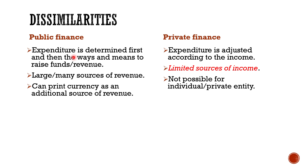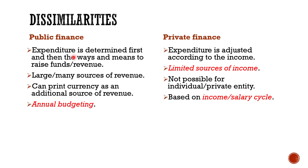Fourth, annual budgeting: in public finance there are annual budgets which balance income and expenditure of the government, but in private finance budgeting is based on the income or salary cycle — which may be weekly, daily, or monthly. The state estimates its income and expenditure annually, but there is no such limitation for an individual — it may be weekly, monthly, or sometimes annually.